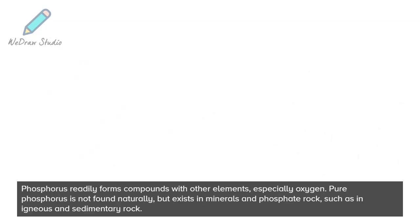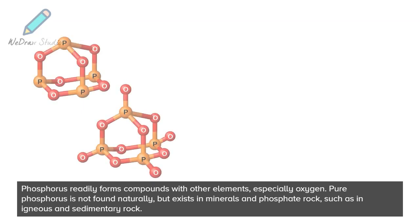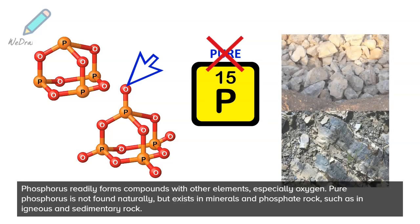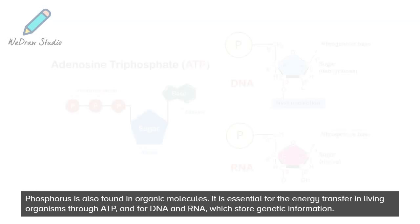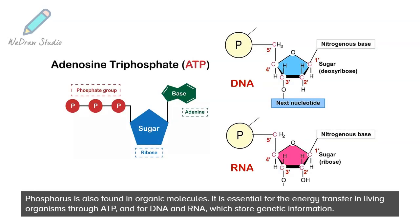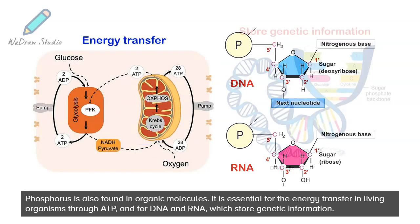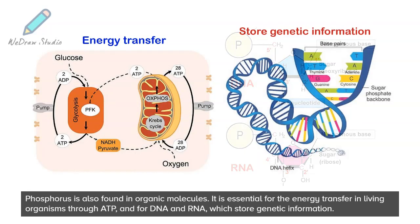Phosphorus readily forms compounds with other elements, especially oxygen. Pure phosphorus is not found naturally, but exists in minerals and phosphate rock, such as in igneous and sedimentary rock. Phosphorus is also found in organic molecules. It is essential for energy transfer in living organisms through ATP, and for DNA and RNA, which store genetic information.